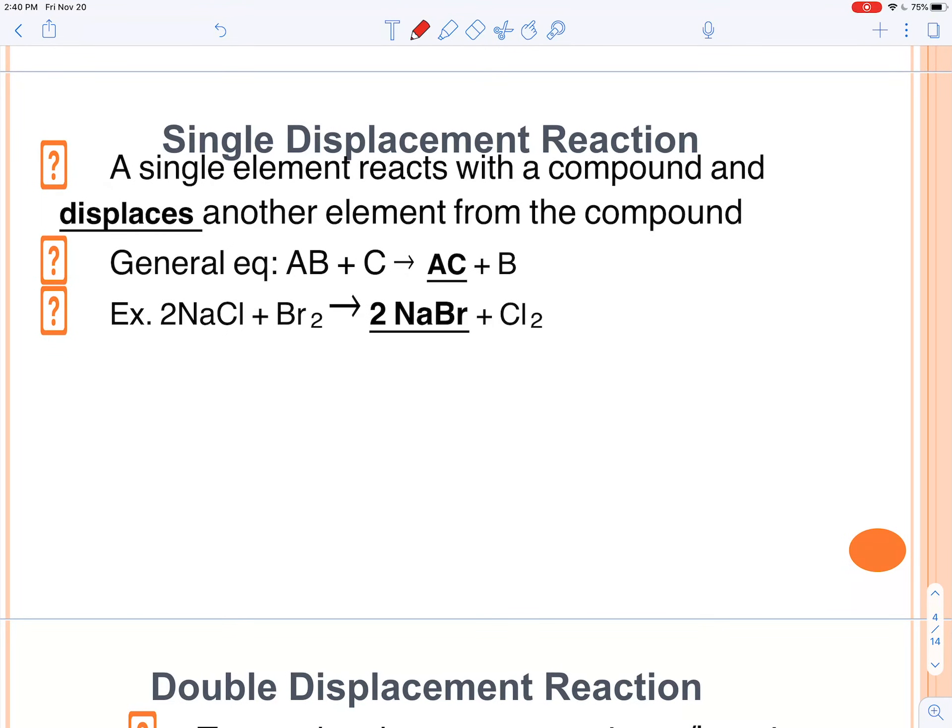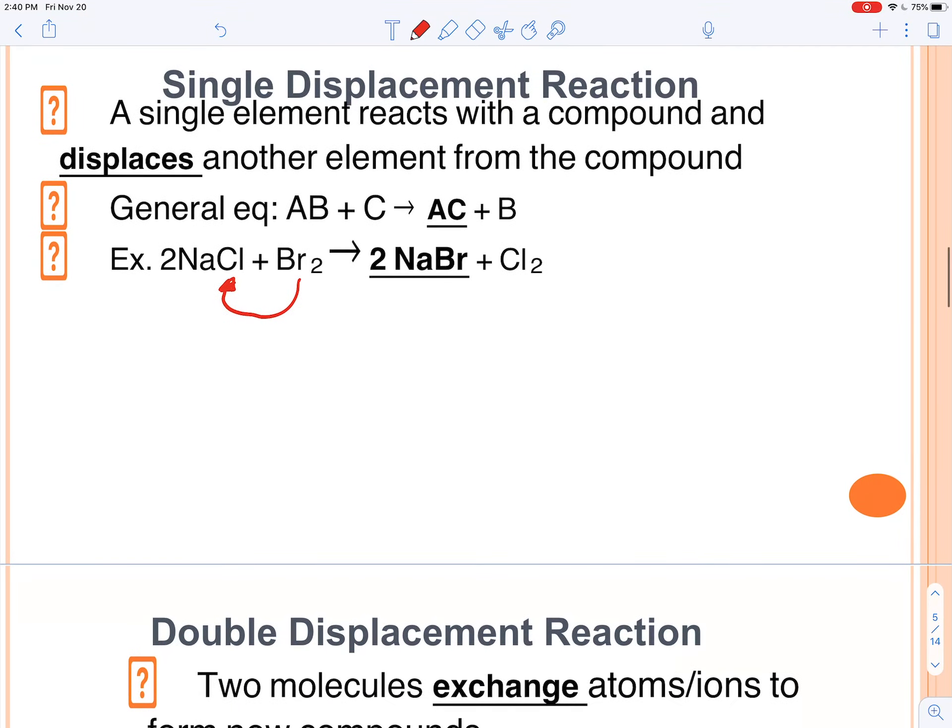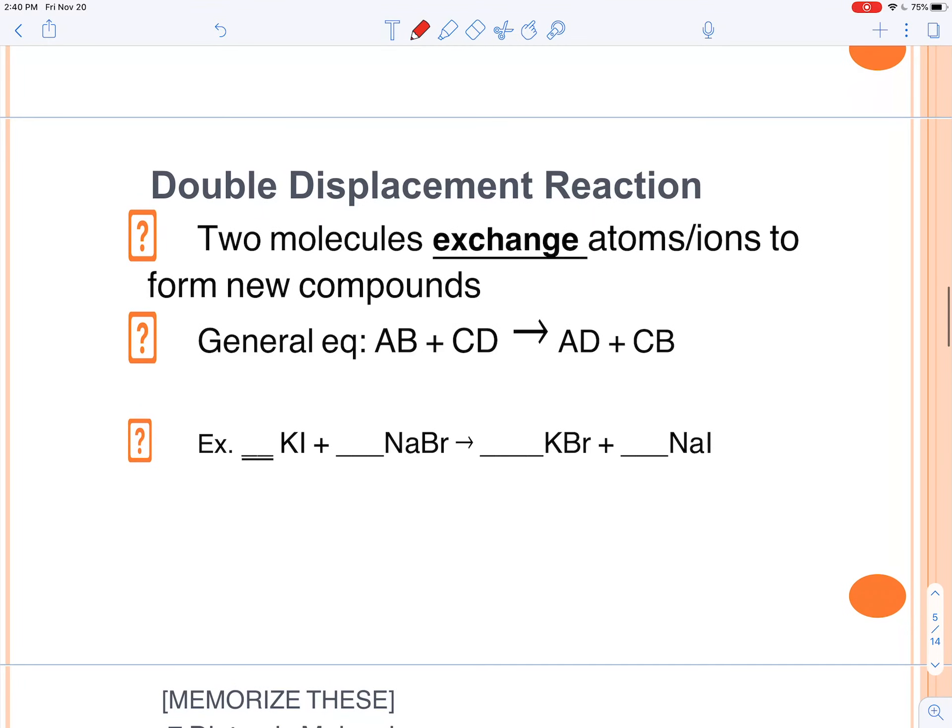In single displacement, we get an element displacing another element in a compound. So what bromine is doing here is it's replacing the chlorine. It's basically kicking it out. So we're left with NaBr and then chlorine gets kicked out.